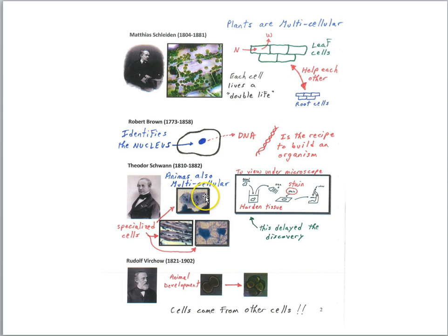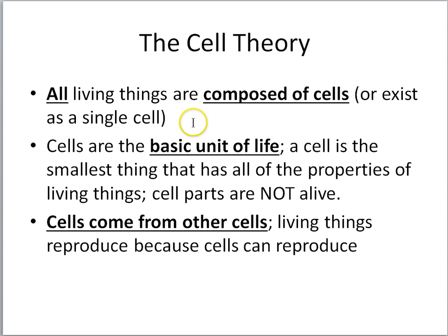Our final step in the cell theory is the contribution by others including Virchow, who argued that cells come from other cells. At the time, people thought that living things could spontaneously generate. Living things could appear from non-living materials and so perhaps cells could spontaneously generate. He argued that cells don't spontaneously generate. Cells come from other cells. In conclusion, the cell theory has three basic parts: All living things are composed of cells or exist as a single cell. Cells are the basic unit of life. A cell is the smallest thing that has all of the properties of living things. The parts of the cell are not alive. And cells come from other cells, which means that living things can reproduce because cells can reproduce.